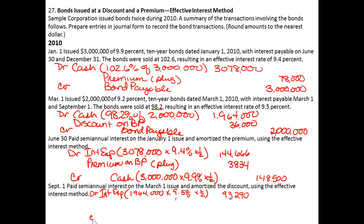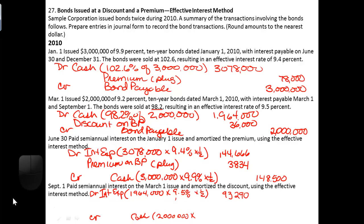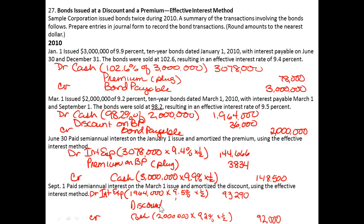We're going to credit cash for the bond — the bond was $2,000,000 times the bond's interest rate of 9.2%, times half a year. So the amount of cash we're going to pay is $92,000 every six months for as long as that bond is outstanding. The discount on bonds payable that we will amortize is the difference, which is $1,290.